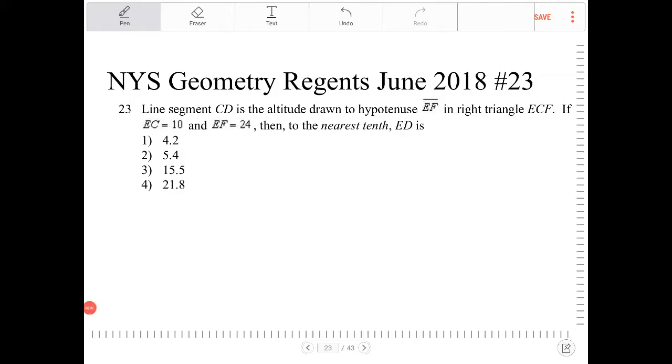Line segment CD is the altitude drawn to hypotenuse EF in right triangle ECF. So let's draw out the situation here. We have triangle ECF where CD is the altitude and it's drawn from the right angle to the hypotenuse.